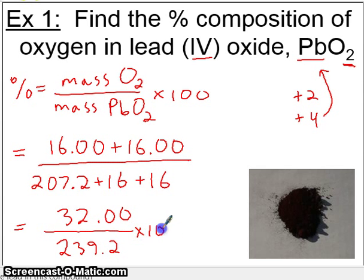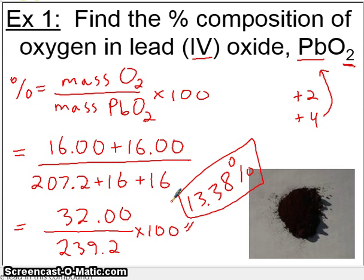Now, we'll multiply this by 100 and put this in your calculator and tell me what you get. Do you get 13.38%? This should be our answer, 13.38%. Now, what this tells us is that this is the percent of oxygen, remember.